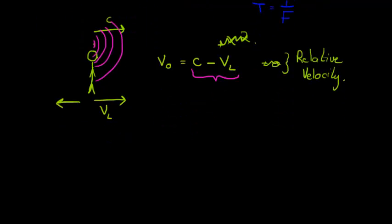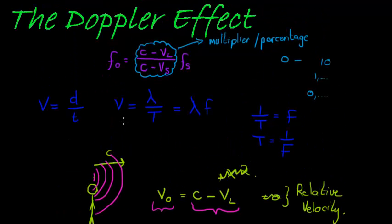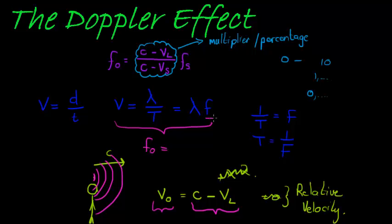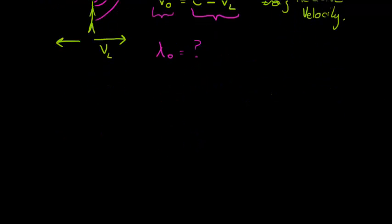Now, how about the wavelength that you are observing? We want both the observed velocity and the observed wavelength because we want to use the formula: frequency observed equals velocity observed divided by wavelength observed. So I need to find those two values.